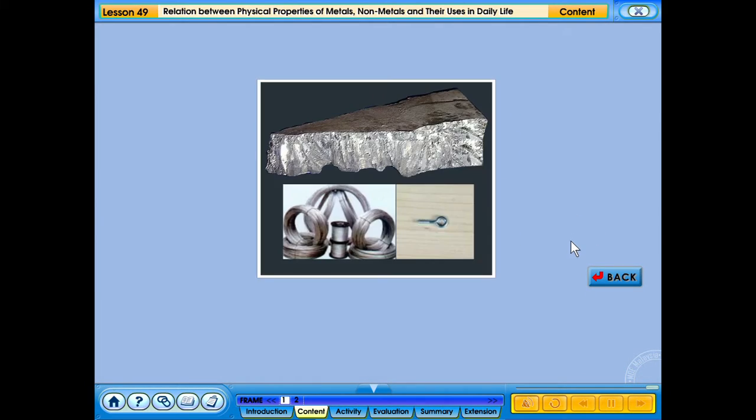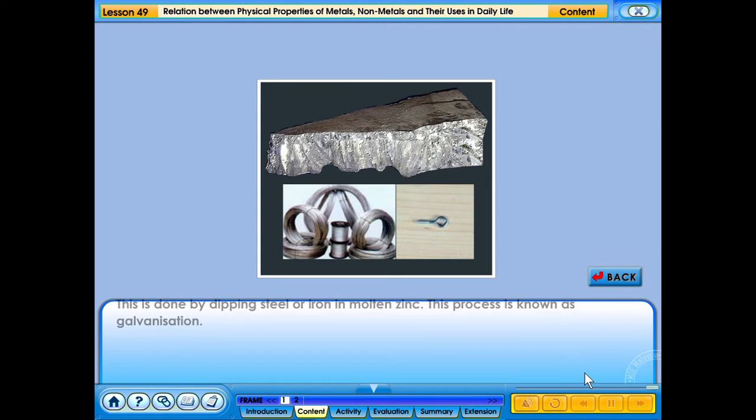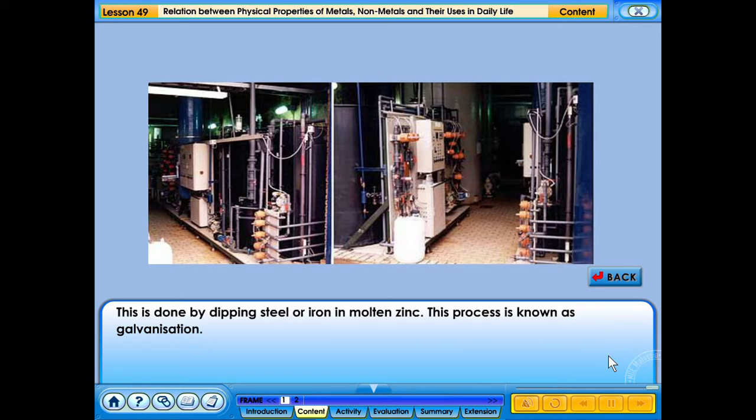Zinc has many commercial and industrial uses. One of the biggest uses of zinc is in making protective coatings for iron and steel. This is done by dipping steel or iron in molten zinc. This process is known as galvanization. Can you explain why zinc is suitable as a protective coating for iron and steel?